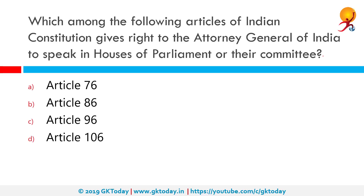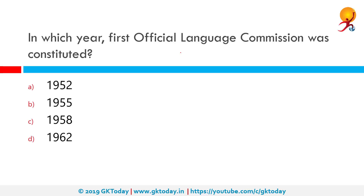Which among the following articles of the Indian Constitution gives the right to the Attorney General of India to speak in the House of Parliament or their committees? Any and all rights or powers that the Attorney General of India has come from Article 76. The Attorney General is the government's chief legal advisor and the primary lawyer for the government in the Supreme Court of India. He is appointed by the President of India and holds office during the pleasure of the President, and must be qualified to be appointed as a judge of the Supreme Court.